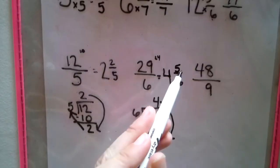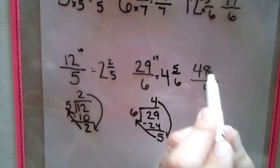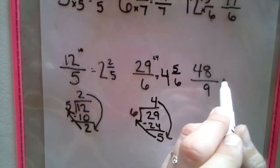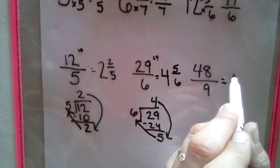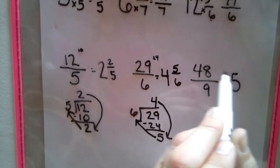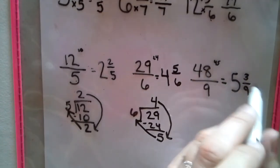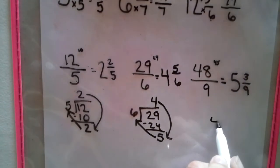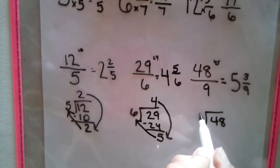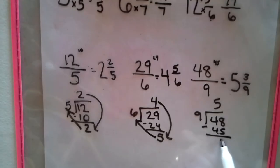How many nines in 48? 5 makes 45. Left over is 3. We can reduce that. 48 divided by 9 equals 5 and three-ninths.